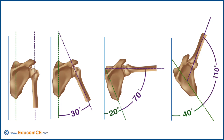The actual ratio can vary during the different positions of the arc of elevation and can be different from individual to individual. Therefore, it's always important to compare the involved side with the uninvolved.